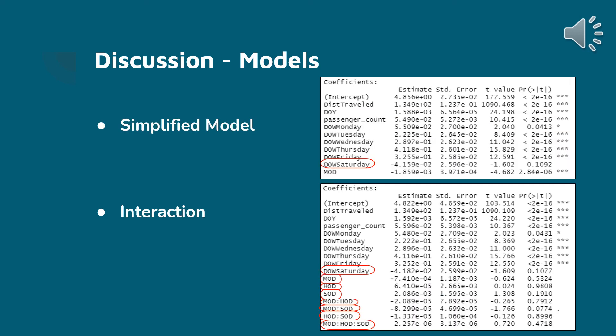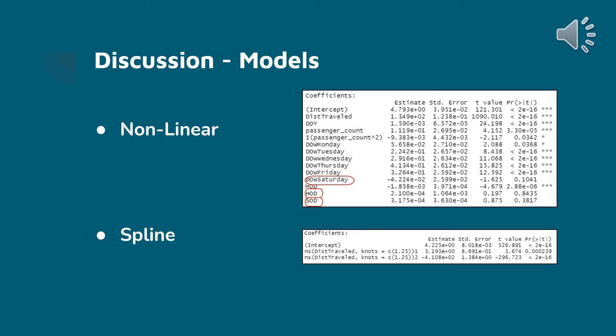In this slide, we are discussing the simplified model and the interaction model. Again, the circled variables are not statistically significant in the two models, meaning we cannot say whether or not these variables affect fare prices. All other variables with probabilities less than or equal to 0.05 are significant and do affect the cab fare.